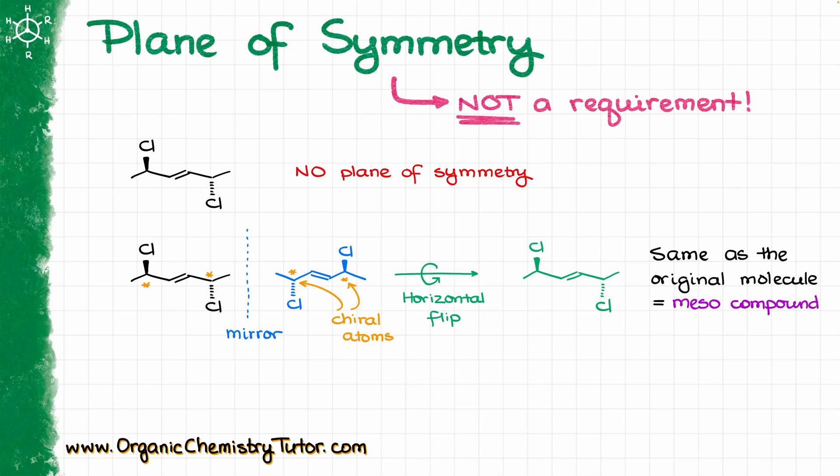Meso compounds are superimposable with their own mirror images due to the element of symmetry, and not every element of symmetry is a plane. I am not going to bore you with the details of the geometry here, but essentially we can have a plane of symmetry or we can have an inversion point or the axis of inversion.